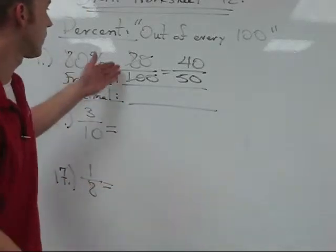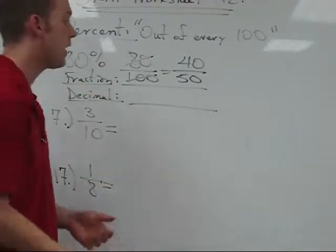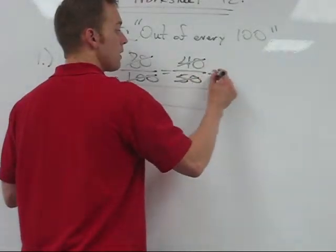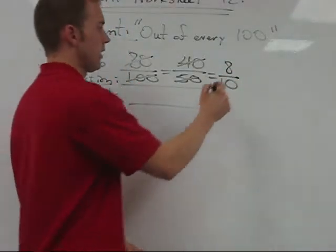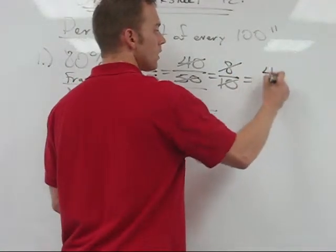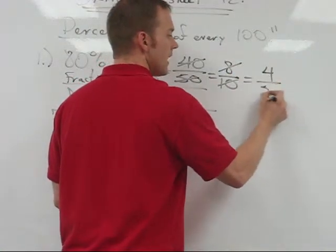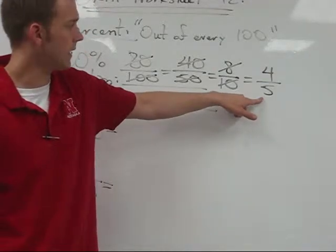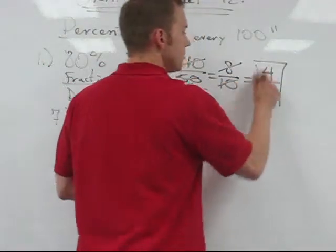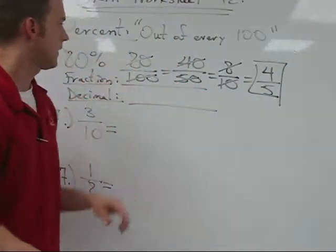But you know what, they also both end in zero. Something we could have done to begin with is divide them both by five. Dividing these both by five, we get eight on top, 10 on bottom. These are both even. Eight divided by two is four. Ten divided by two is five. And I noticed five is prime and it doesn't go into four. So here's what I know. Four fifths is the same as saying 80 out of 100.